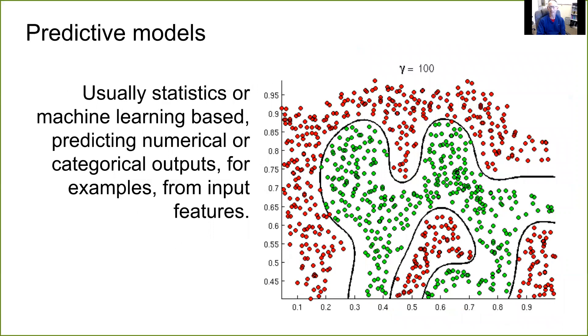And now predictive models. This is what we build with machine learning. So usually statistics or machine learning based, predictive numerical or categorical outputs, for example, from input features. So you know what a predictive model is, I think, perhaps best, or quite well. It is a computer program essentially. It can be done by hand, as you know. So it's a mathematical program whereby inputs are converted to outputs predicting a particular regression or classification. And this figure represents what could be a support vector machine, or it could be something else.